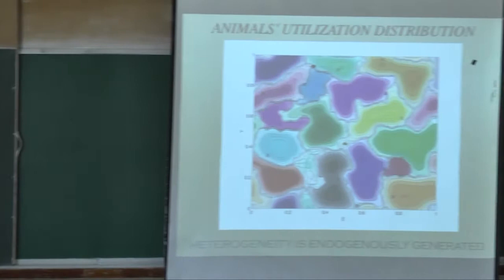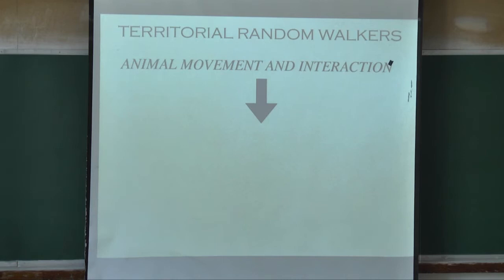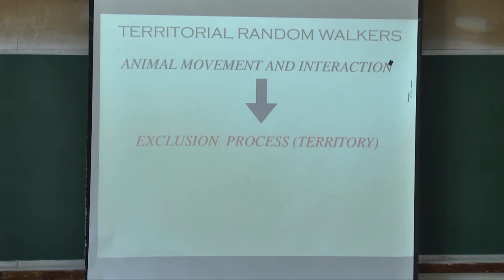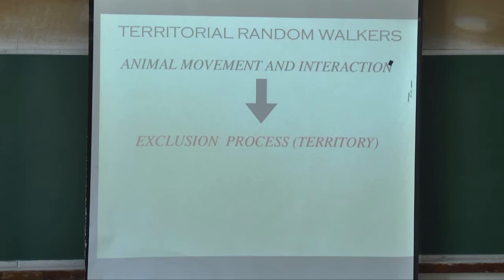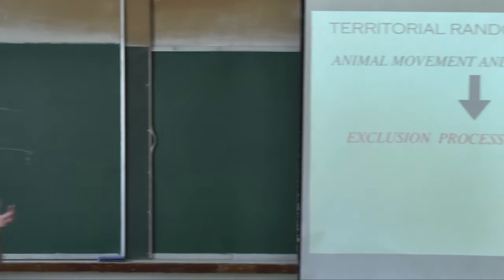To re-emphasize: animal movement and interaction generate an exclusion process of the territory. When you look at long-time dependence of the mean square displacement — remember, the motivation was MSD that was not saturating but kept increasing — that has specific time dependence. In 1D it's square root of time; in 2D it's slightly sub-diffusive.